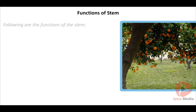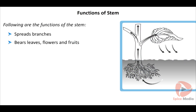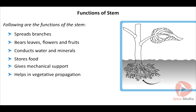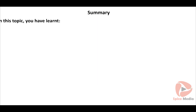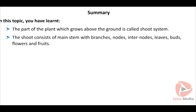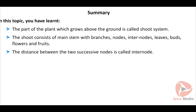Functions of the stem: the main function of the stem is to spread its branches. It bears leaves, flowers and fruits, conducts water and minerals, and some stems store food. The stem provides mechanical strength to the plant and also helps in vegetative propagation. The part of the plant which grows above the ground is called the shoot system. The distance between two successive nodes is called an internode.